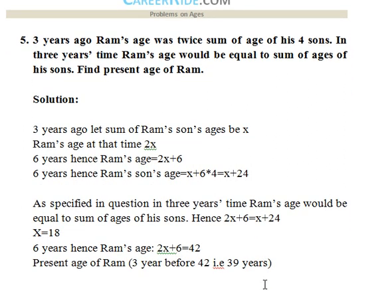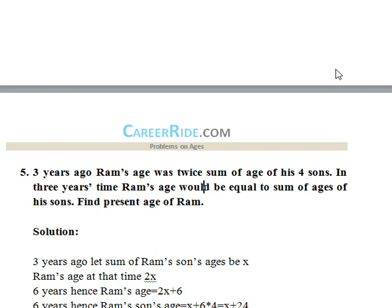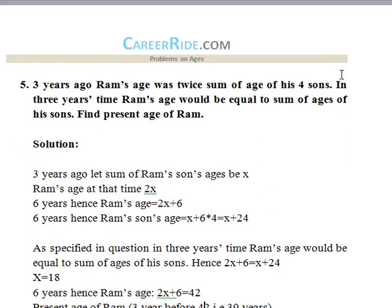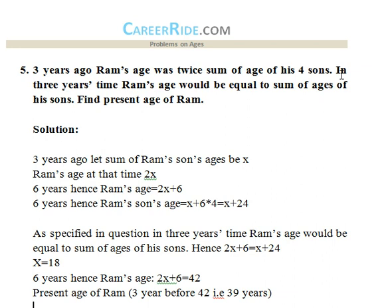The fifth question is a tricky one in presentation but easy to solve — you have to pay careful attention while reading. Three years ago, Ram's age was twice the sum of the ages of his four sons. And in three years' time, Ram's age would be equal to the sum of the ages of his sons. Let the sum of the sons' ages three years ago be x. Ram's age at that time would be 2x.